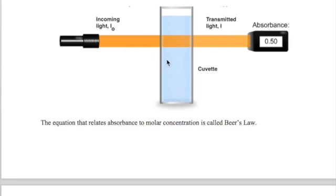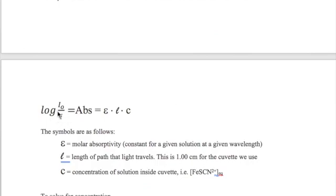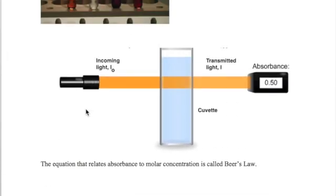When an incoming light strikes a solution, some of that light is absorbed by the solution. The transmitted light will have a reduced intensity. The absorbance can be calculated as the log of the intensity of the incoming light, I0, over the intensity of the transmitted light, I. The solution is placed in a fairly transparent container called a cuvette. This absorbance value is automatically shown on the spectrophotometer, for example 0.5 in this case.